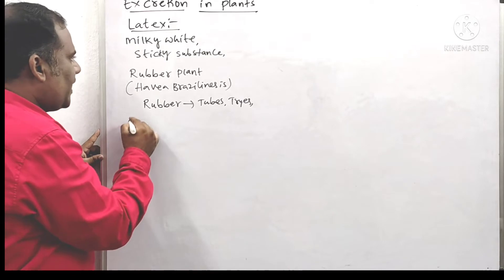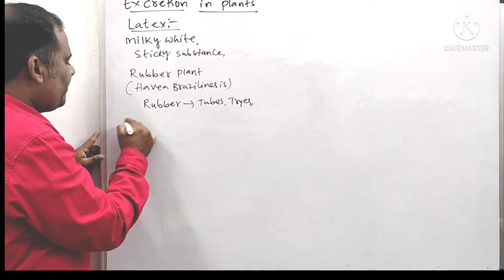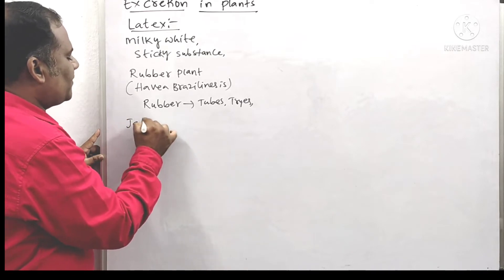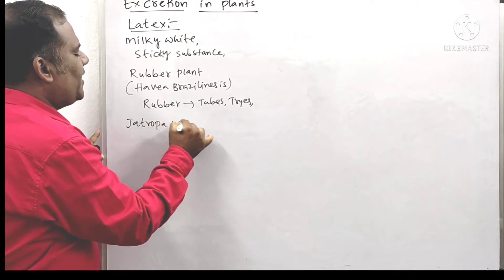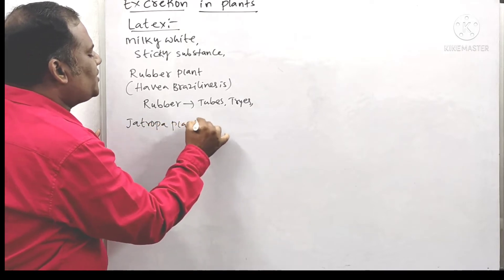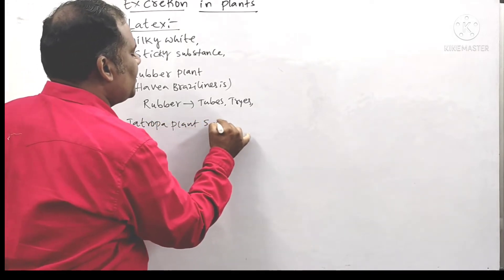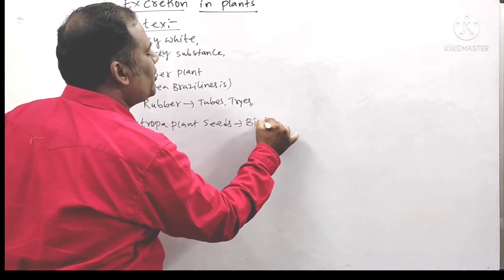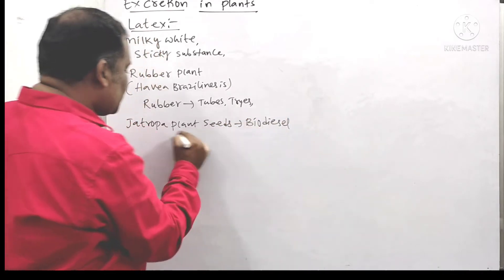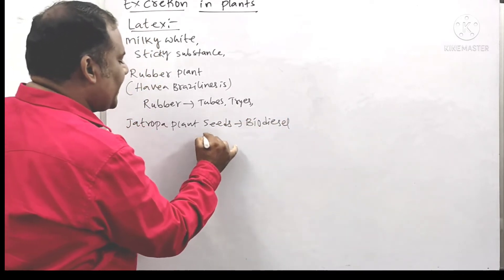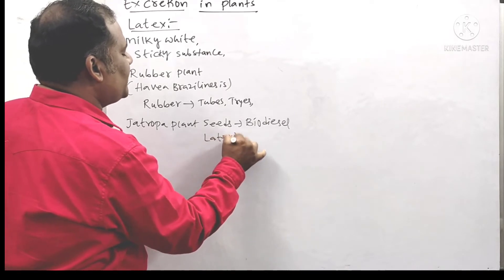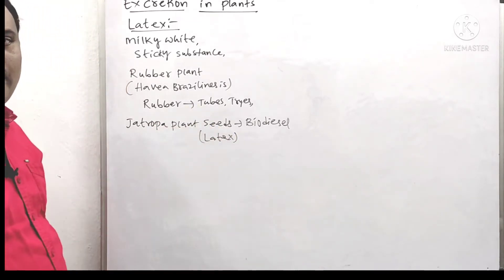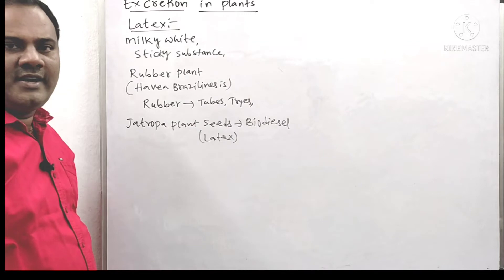Next is the Jatropha plant. From the Jatropha plant seeds, we can produce biodiesel. It is also a form of latex — from the latex of Jatropha seeds, we can produce biodiesel.